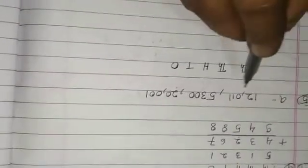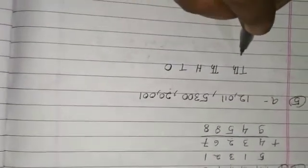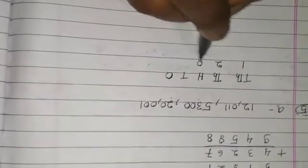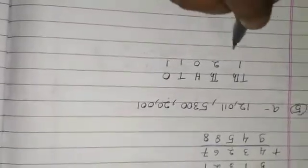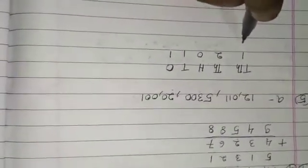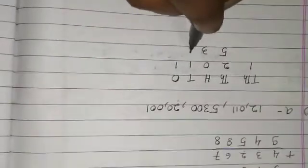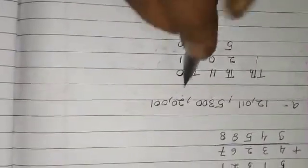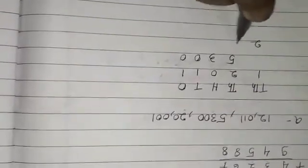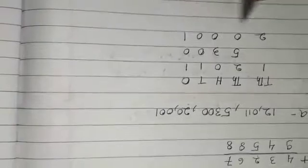You arrange these numbers in their place. 1, 10, 100, and 5,300.